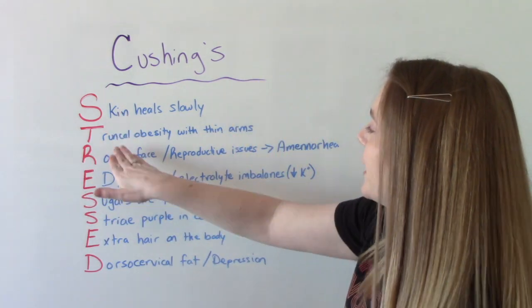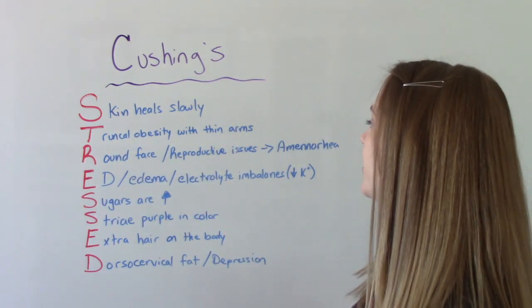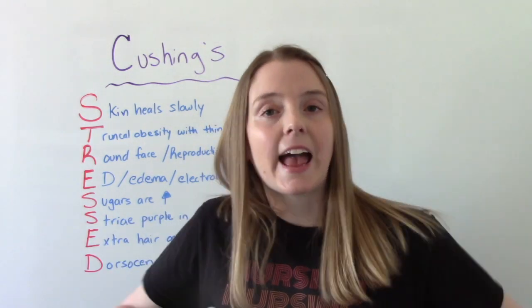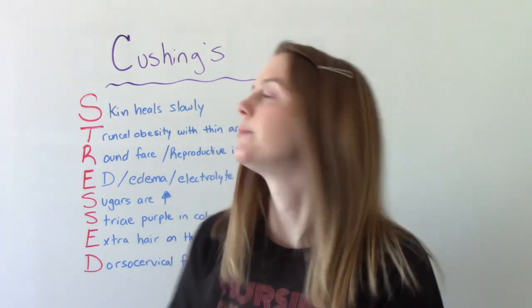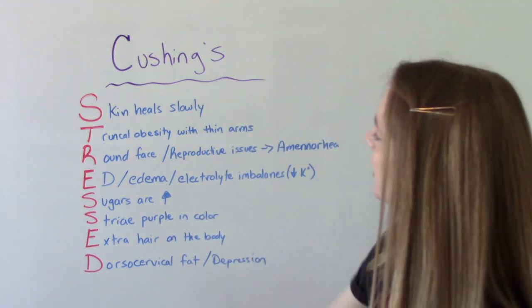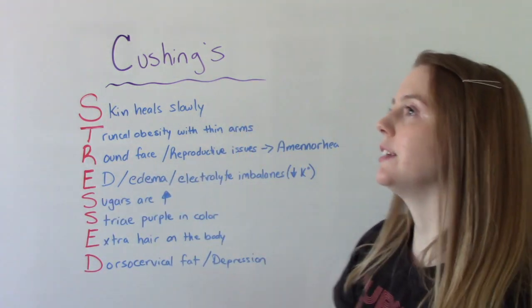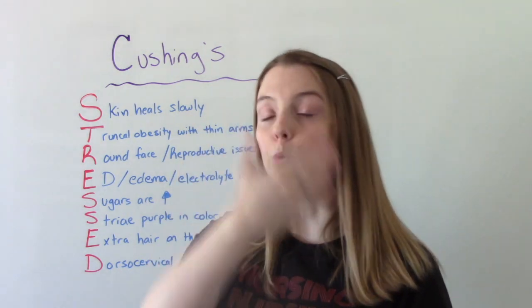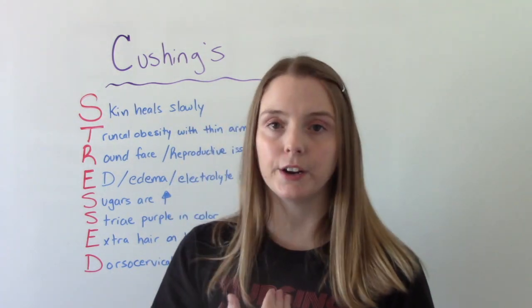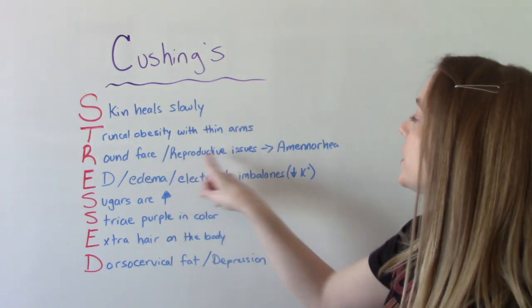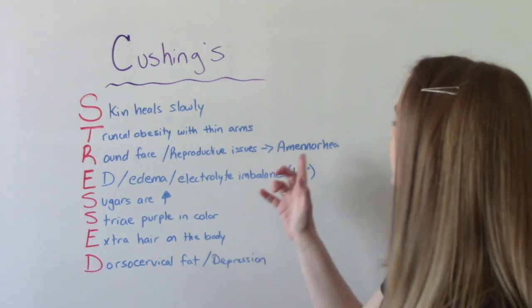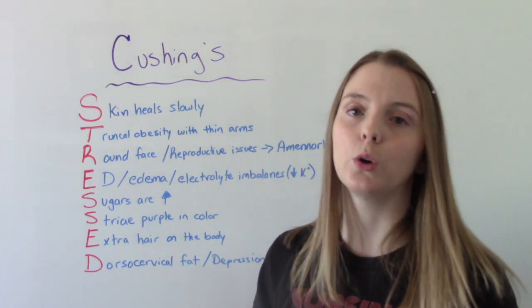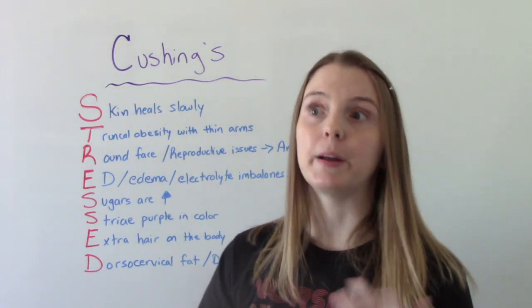T: they have what's called truncal obesity with thin arms. So their midsection is heavy — bigger in the middle — but they have very skinny arms. R is for round face, sometimes referred to as a moon face appearance. Also, reproductive issues: in women who have this, they may experience amenorrhea, so lack of menstruation.